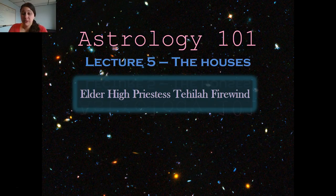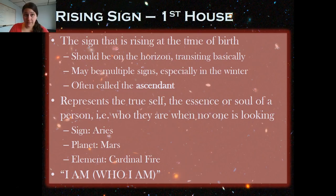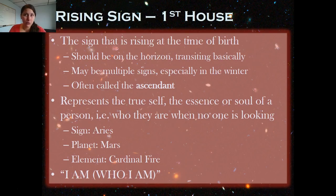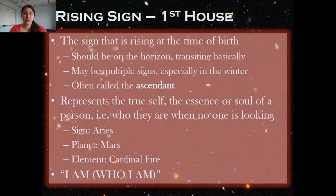The reason for this is because the first house is called the rising sign. Many people say the most important sign is the sun sign, but that's not really true. The sun sign is your conscious self — it's how you want the world to see you and how you interact with the world. But the rising sign is your true self, the essence of your soul. It's always the sign that is rising in the east at the time of your birth, often called the ascendant, and it's usually in transit — in the process of rising.